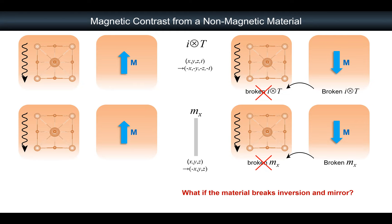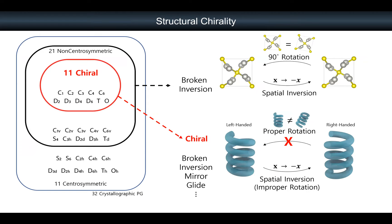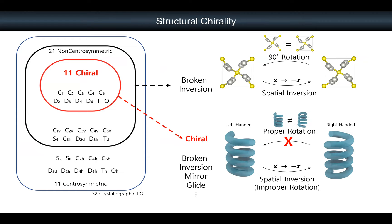Here is an interesting question: what if we break inversion symmetry from the material, and also break mirror symmetry from the material? Then it sounds like it is allowed. So the question is: what type of material breaks both inversion symmetry and mirror symmetry? We all know the answer — it's so popular nowadays — it's chiral material. Structural chirality, by definition, means we break all improper symmetry operations: inversion, mirror, glide — all improper symmetries are broken in a chiral structure. This implies that in chiral structured material, even without magnetic order, we might be able to see magnetic contrast.